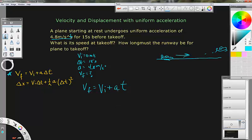So vf we don't know, vf equals vi which is 0, so that's 0 meters per second, plus a times t. Well, a is 4.8 meters per second squared, and t which we're going to multiply it by is 15 seconds.